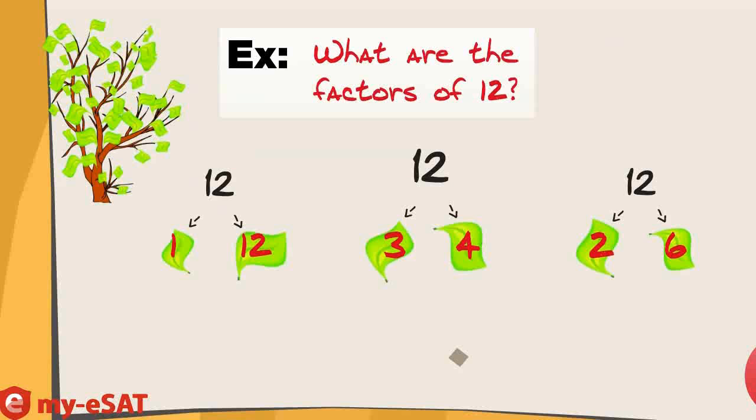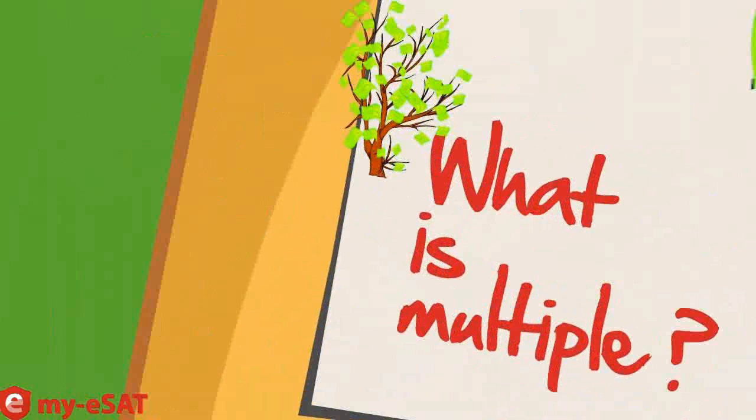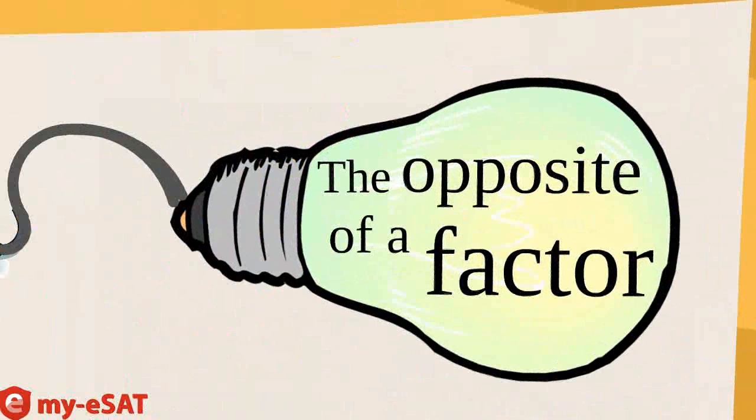Awesome! So what are multiples then? Well, they are the exact opposite of factors. Specifically, multiples of a positive integer are those that have it as its factor. So that means if factors are divisible into a number, then multiples are multiples of that number.